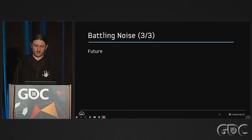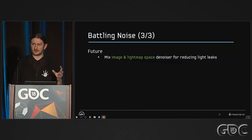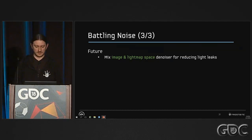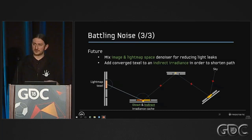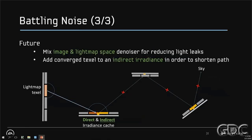In the future, one additional thing we would like to do is try to mix image-space and light-map-space denoisers. On top of that, we also want to have an indirect irradiance cache, because then we can shorten the path — if we know the indirect light has converged, we can stop tracing the current path since we know it won't add any additional valuable information.